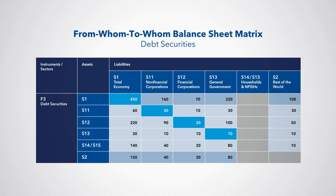Each position is interpreted at the intersection of the row and column. For example, the second cell of the second column, 20, indicates that non-financial corporations hold 20 in debt securities issued by other non-financial corporations. Households and NPISH do not issue debt securities, and therefore the households and NPISH column is grayed out.